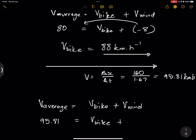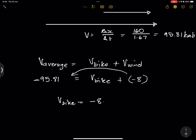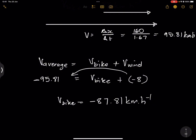The average velocity is 95.81 km/h eastward, which is negative since west is positive. The wind is also eastward at minus 8 km/h. So: negative 95.81 equals the actual velocity of the bike plus negative 8. Rearranging gives the actual velocity as negative 87.81 kilometers per hour — meaning 87.81 km/h in the easterly direction.